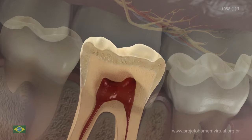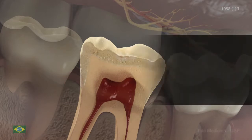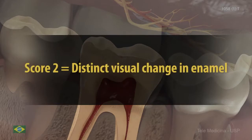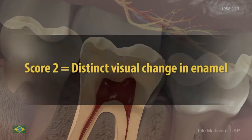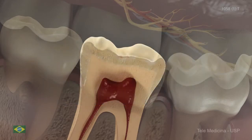Score 1 is seen only after air drying for 5 seconds or restricted to the pit and fissure. Score 2 lesions are more advanced than code 1; air drying is not necessary to detect them in both wet and dry enamel.